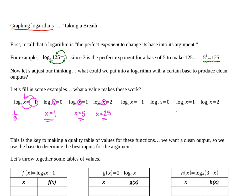For this next set we've got log base 7, and we're trying to find nice clean inputs that give us really good outputs. I'd challenge you to pause and try these. Here we go: for the first one I want 7 to the negative first power; for the next, 7 to the 0th; then 7 to the first; then 7 to the second. We're getting those argument values that make the nice perfect exponent relationship hold.